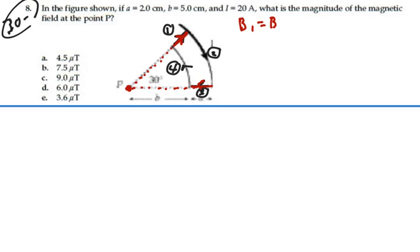Same thing for segment number 3 over here. Point P is off the end of that segment, and so there would be no contribution to magnetic field at point P as well. So in terms of magnetic field 1 and magnetic field 3, there is no magnetic field contribution at point P because we are off the end of those segments.